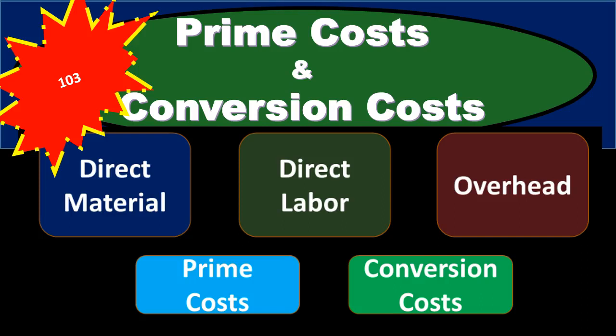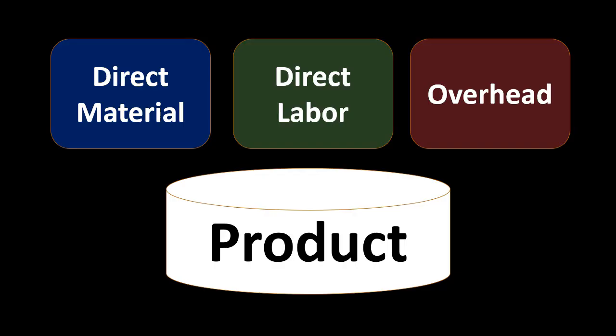In this presentation we will take a look at prime costs and conversion costs. When considering prime costs and conversion costs, we are looking at the cost of production — production costs as opposed to period costs. When considering production costs we always think about direct materials, direct labor, and overhead.